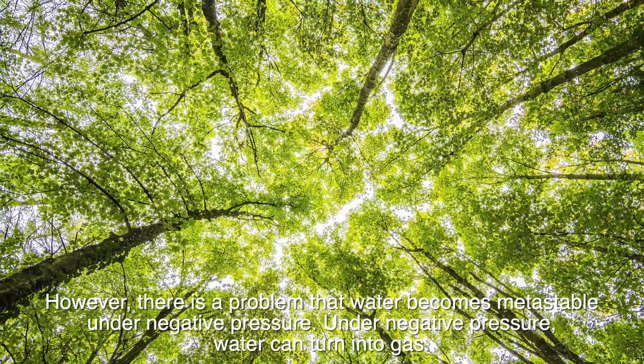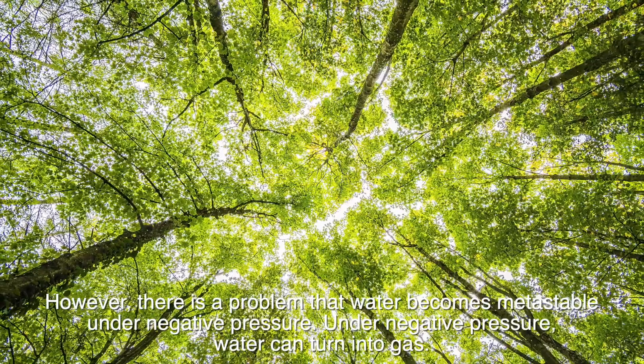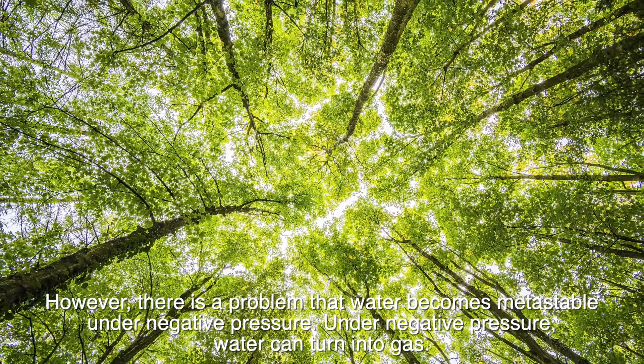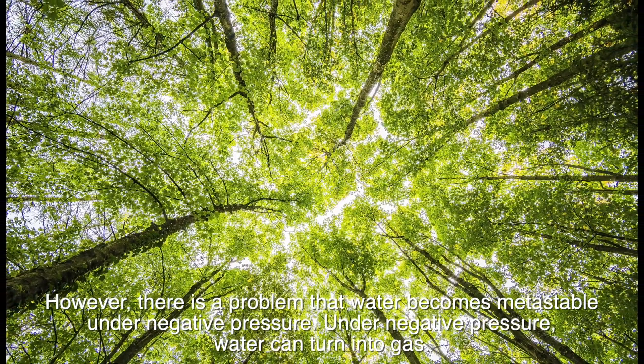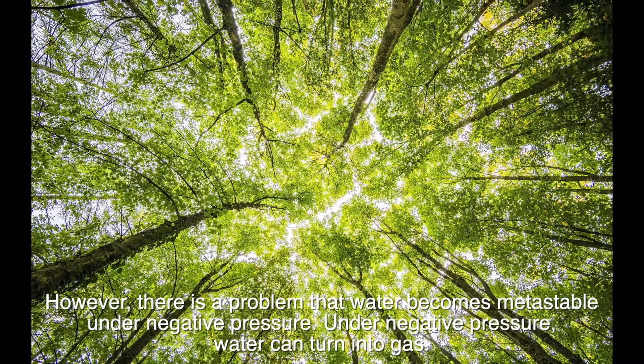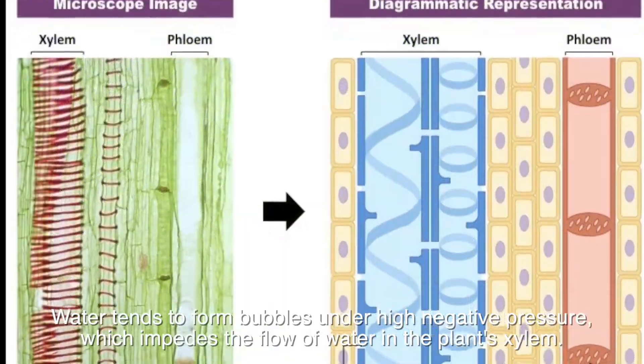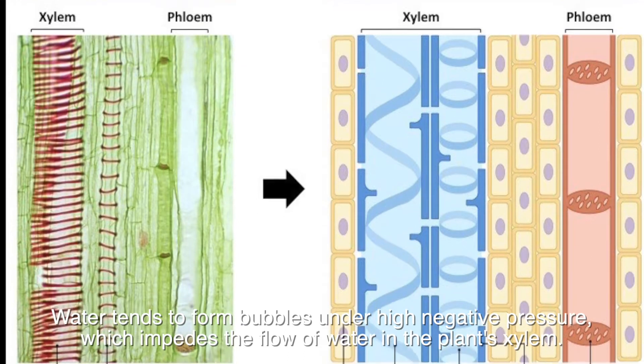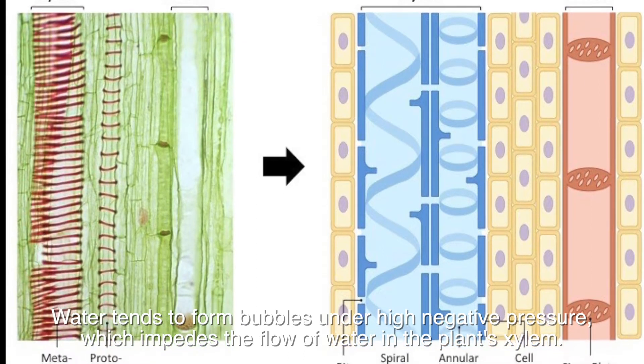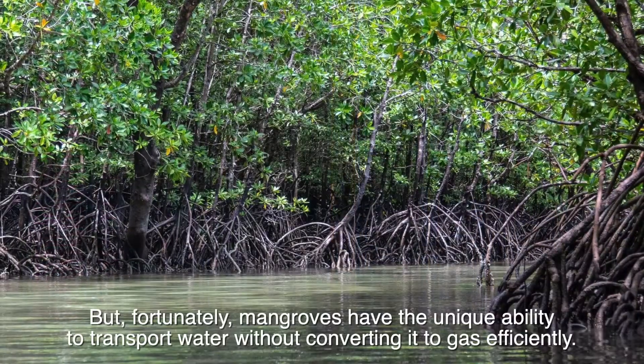However, there is a problem: water becomes metastable under negative pressure. Under negative pressure, water can turn into gas. Water tends to form bubbles under high negative pressure, which impedes the flow of water in the plant's xylem.